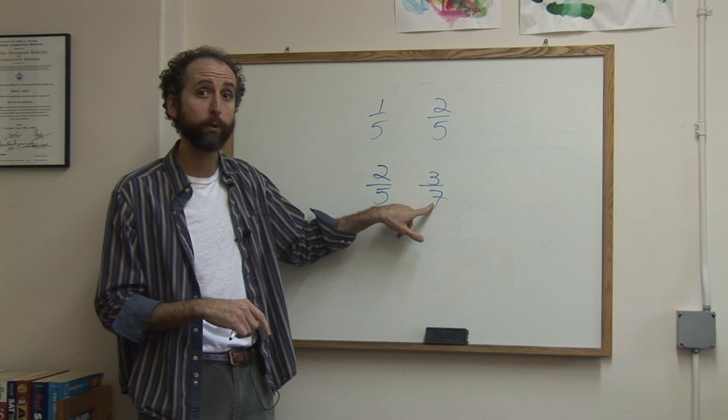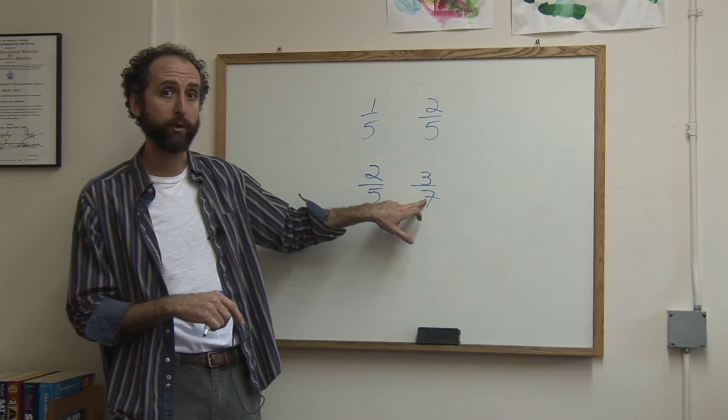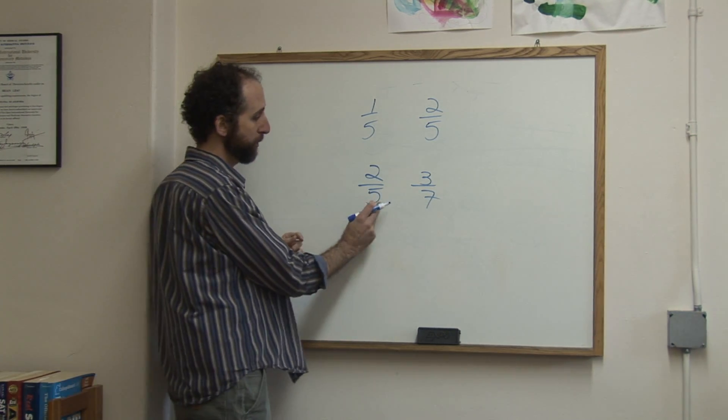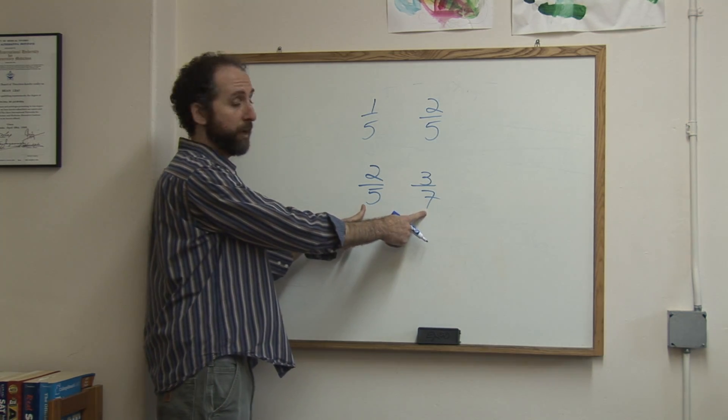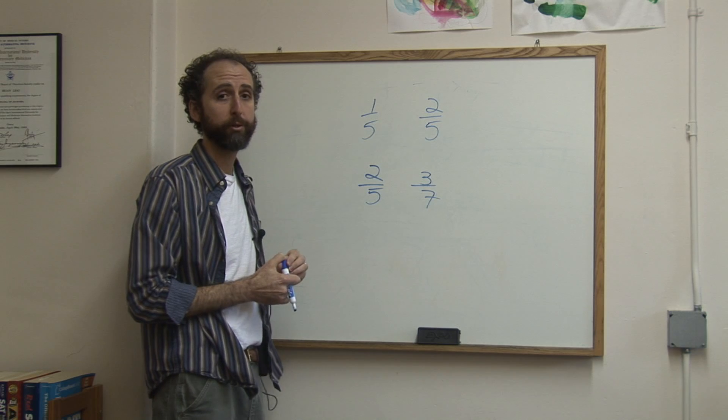But all we do is make the bottoms equal. We look for a common denominator. The common denominator here is going to be thirty-five. And if ever you're stuck, you just multiply five and seven, the two numbers, and that will give you the common denominator.